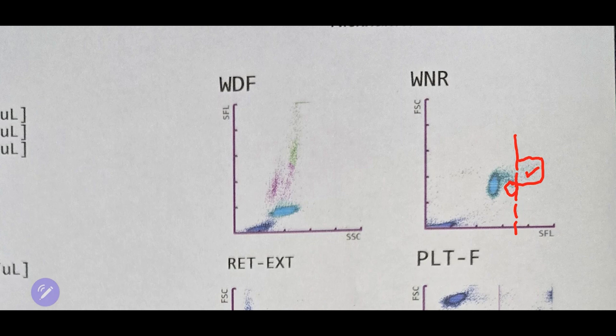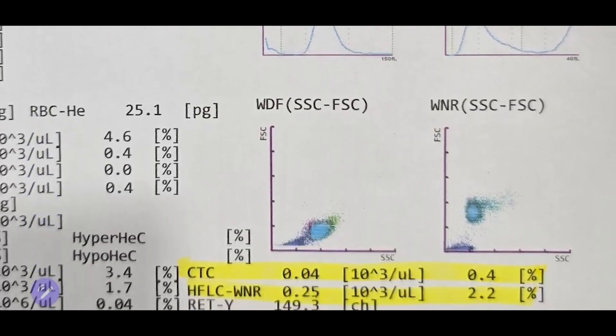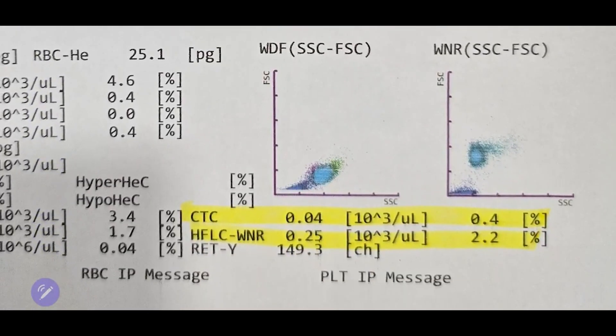When we look at the numbers for the same dog, what we see is that the CTC has increased to 0.04 while the HFLC has risen to 0.25. Therefore, this type of graph indicates an animal in the lymphoma group.